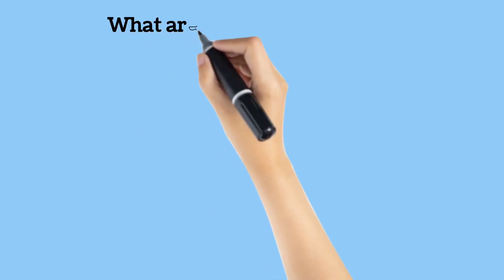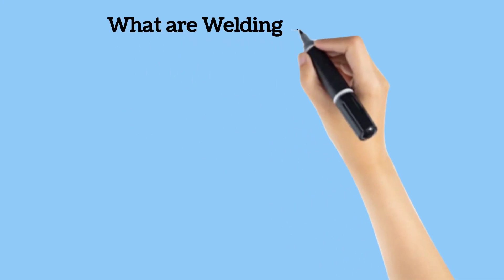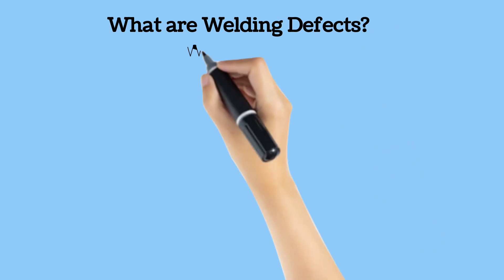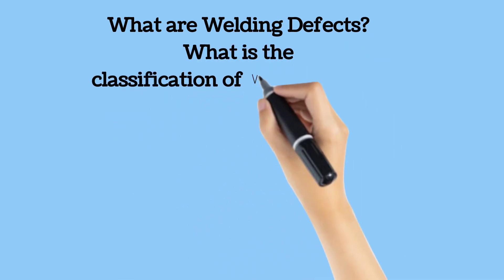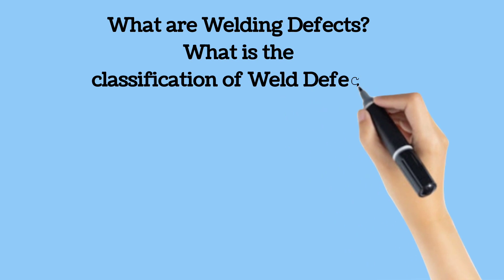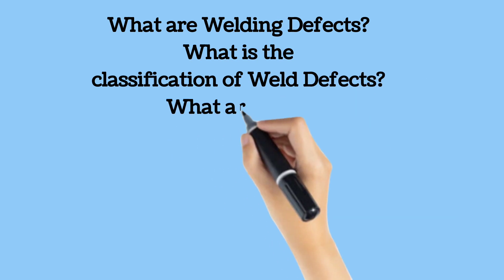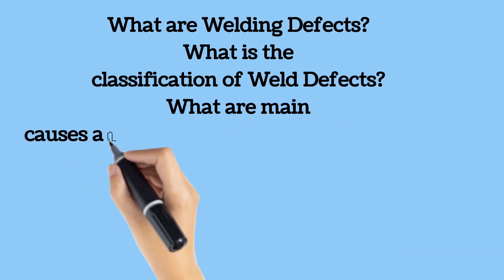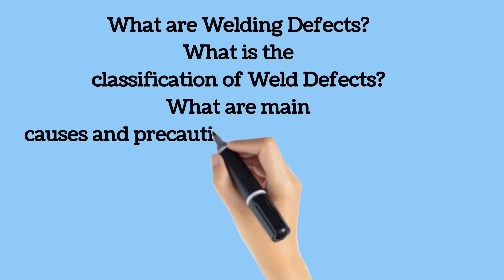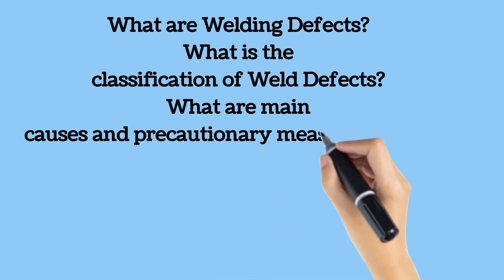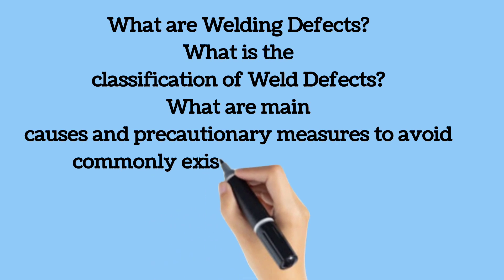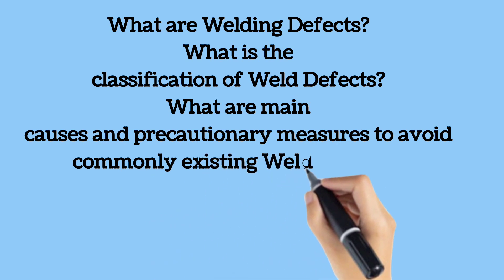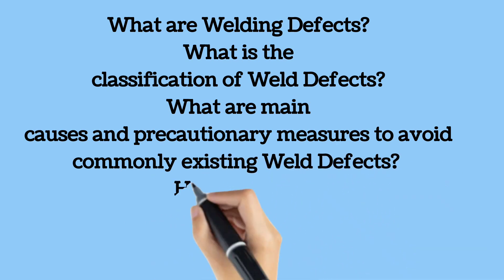In this video we will discuss what are weld defects, what are common existing welding defects, how welding defects can be categorized as external or visual defects, and how welding defects can be categorized as internal, subsurface, or hidden defects. We will also discuss a few commonly existing welding defects, their main causes, and prevention criteria for avoiding such welding defects.